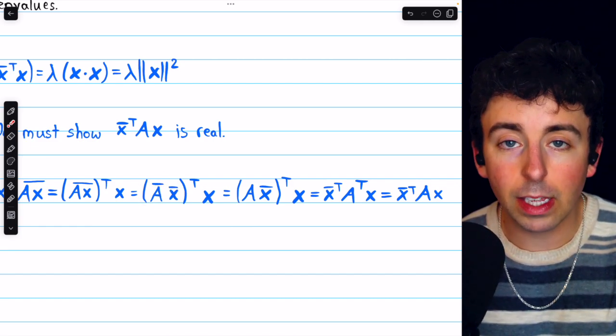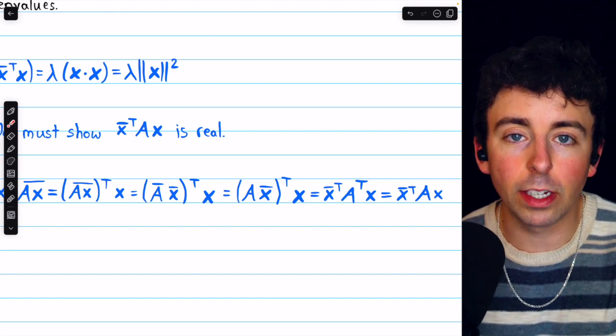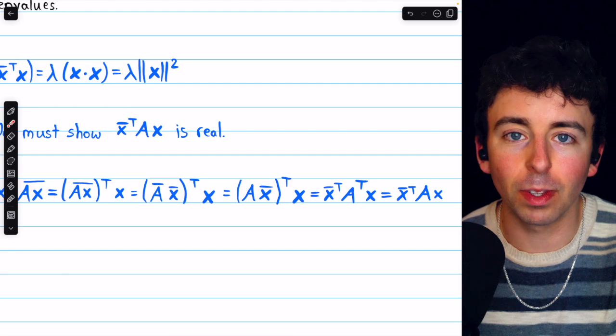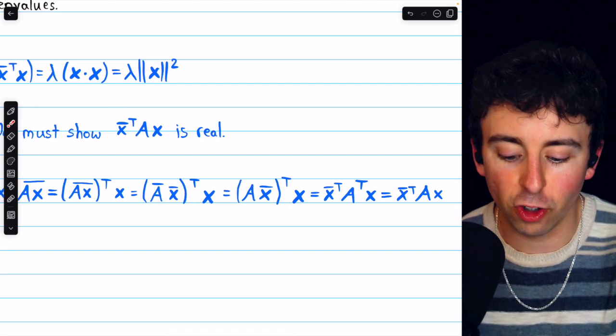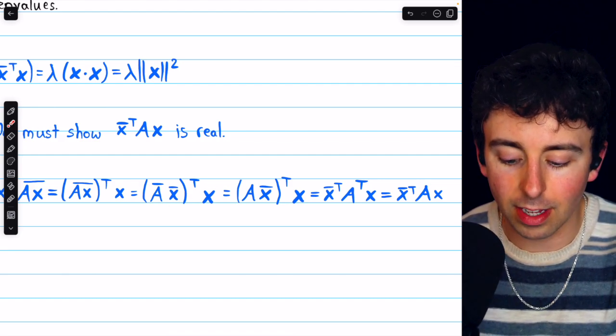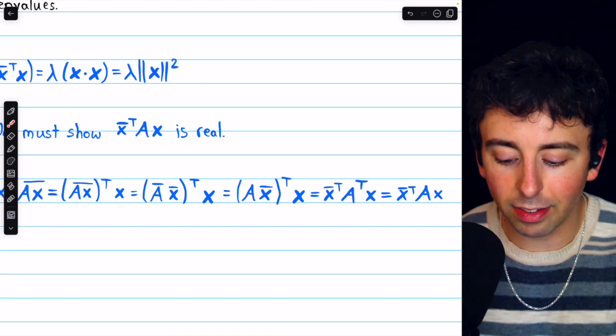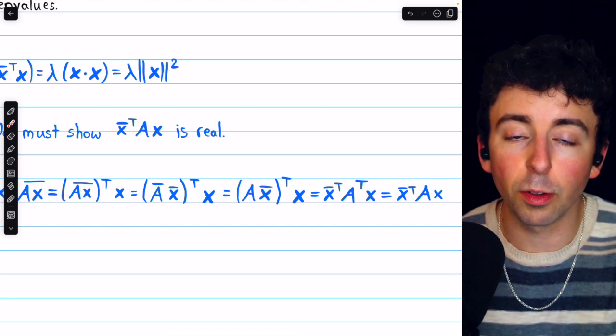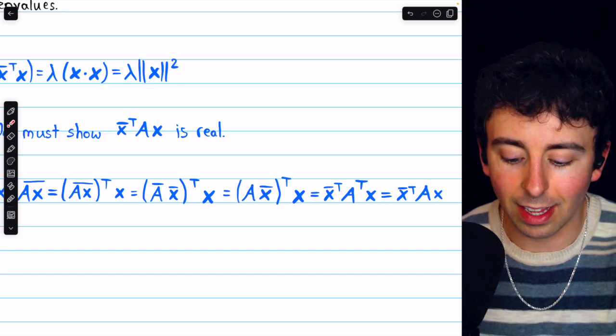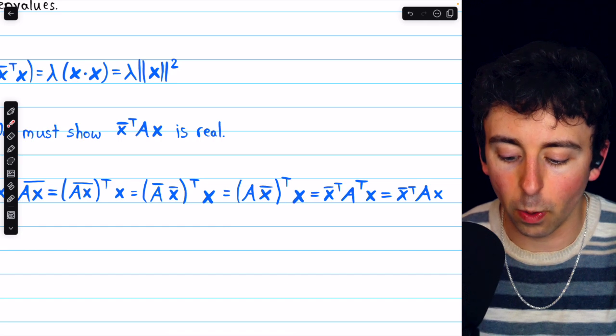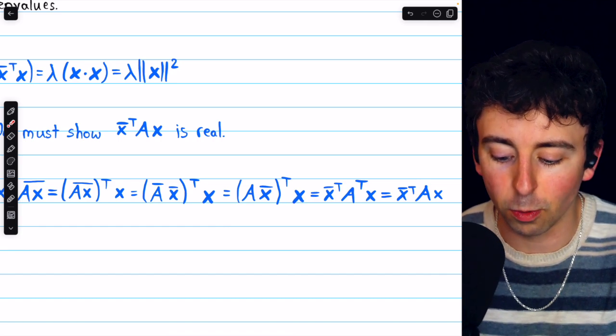Now the conjugate of A, because A is taken to be a real symmetric matrix, the conjugate of A is just A, because the conjugate of a real matrix does not change it. So this is equal to this. But then the transpose of a product is just the product of the transposes in the reverse order. So this we can rewrite as x conjugate transpose times A transpose, and of course still times x on the right.